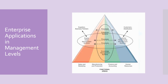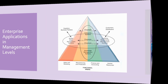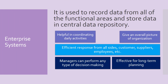Both enterprise systems and knowledge management systems are accessible only by internal users. In the horizontal oval, there are two systems: supply chain management systems and customer relationship management systems. This oval expands outside the boundaries of management levels, meaning these two systems can be accessed by internal as well as external users.